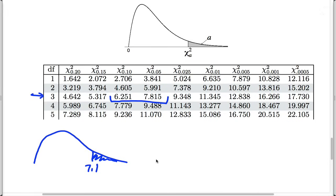That's important to us because what the table is telling us is that the area to the right of 6.251, this area here is given in this subscript. So the area out to the right is 0.10.